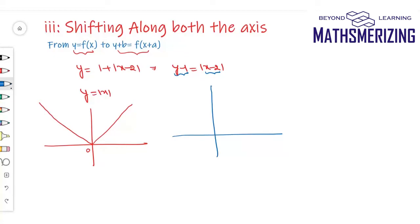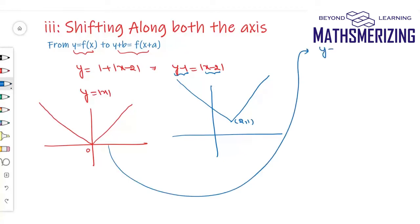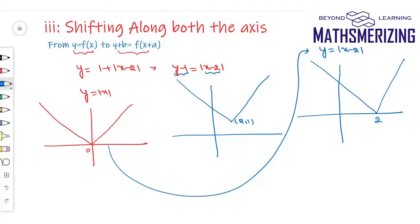I'll shift the entire graph plus 2 units along the x-axis and plus 1 unit along the y-axis. I can take both transformations simultaneously or go sequentially. From mod x, I'll go to mod of (x−2) by shifting the graph horizontally plus 2 units along the x-axis. Then I'll shift this graph plus 1 unit along the y-axis, moving it upwards.